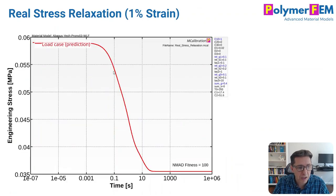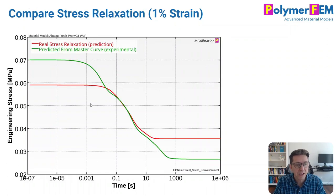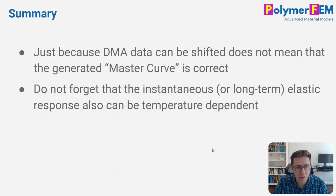So I have the answer. I can predict what the stress relaxation should have been for this material at 1% strain. Here it is. And if I compare the master curve approach in green to the actual stress relaxation response that it should be, you see there's a huge difference in both really small frequencies and times or very high. So this is the common problem that I see. Just because you can shift your experimental data if you do DMA tests doesn't mean that the so-called master curve that you generate is correct. Don't forget that the elastic response can also be temperature dependent.